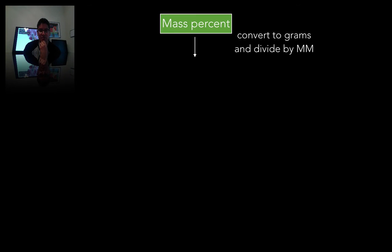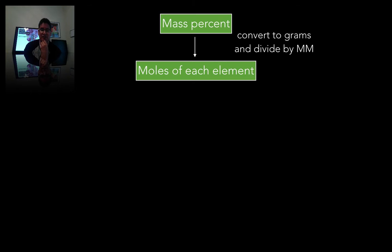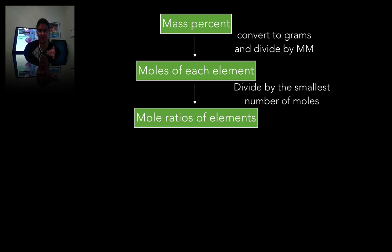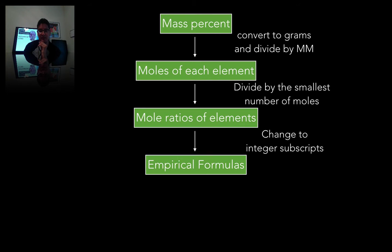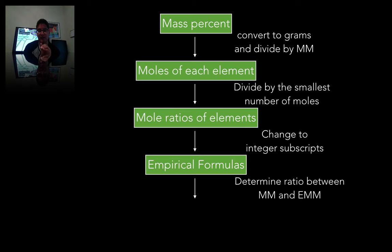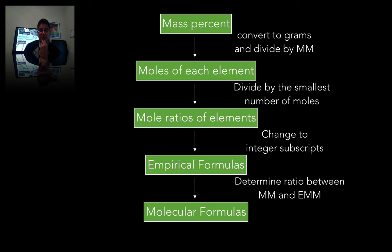The steps I'm showing you are the steps we're going to take to find the empirical and then finally the molecular formula. We'll start with the mass percent, convert that into moles, then divide by the smallest number of moles to find the mole ratio of each element. From that we'll find the empirical formula — the lowest common terms for a compound — and then use the molar mass to find the molecular formula.